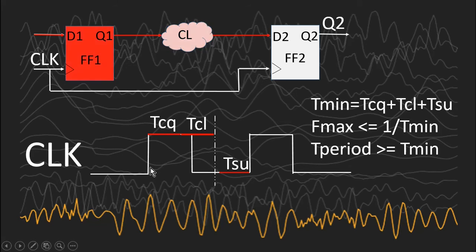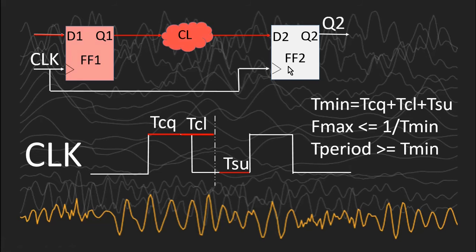So what will happen? At the first positive edge, flip-flop 1 will throw some value, but it will only reach partway through the path when the next active edge arrives. This will violate the setup time requirement of the second flip-flop, which is undesirable — it can cause flip-flop 2 to go into a metastable state, making the behavior of this flip-flop uncontrollable. This was all about the maximum operating frequency of the design and what happens if we violate the calculated maximum operating frequency.